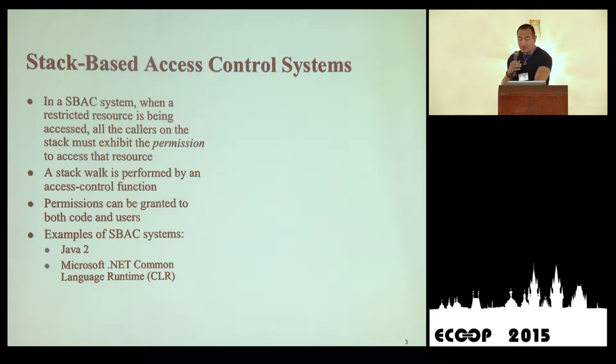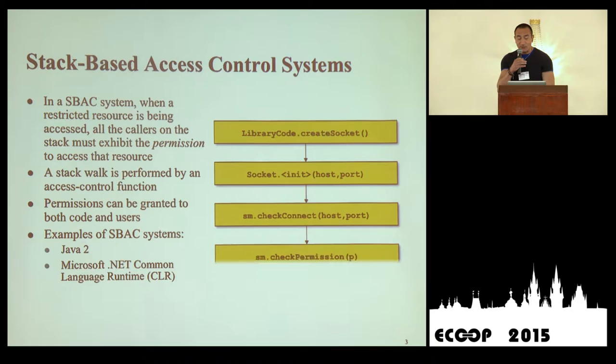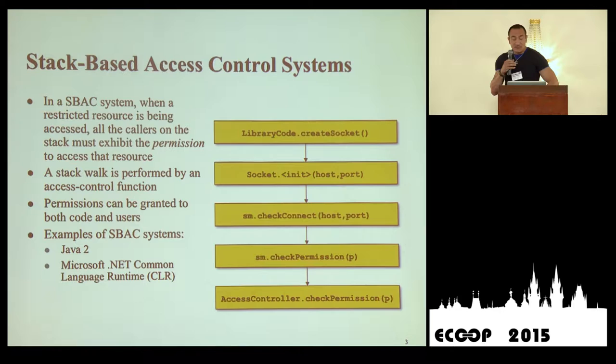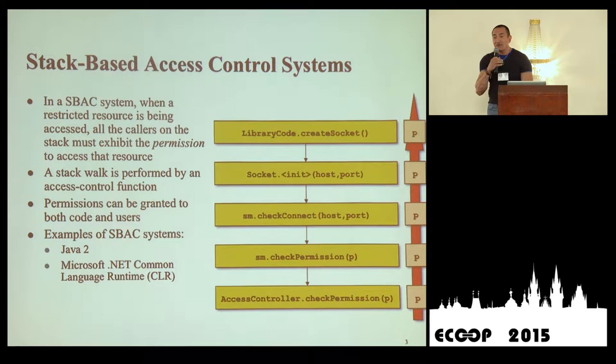Let me give you a quick overview of the Java security model. What happens at runtime is that every time there is a security-sensitive operation — for example, a call to create socket, which calls the constructor of the socket library — eventually there is a call to the security manager, in this case an instance called SM, security manager. We have a call to check connect, then a call to check permission, and finally a call to access controller check permission. This API verifies that all the callers on the stack have the permission to execute the security-sensitive operation, in this case the opening of a socket.